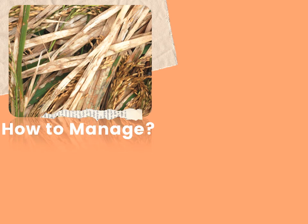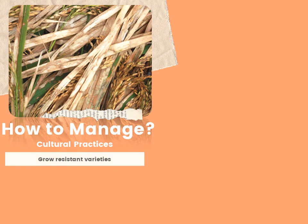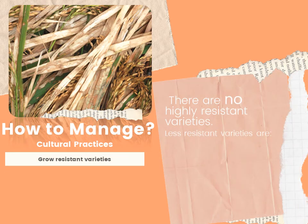For management options, we have cultural, biological, and chemical approaches. Starting with cultural practices: the disease may be controlled by using resistant varieties. There are no fully resistant varieties, but research indicates that moderately susceptible and moderately resistant varieties perform better than susceptible ones. In fields with a history of losses due to severe sheath blight, less susceptible varieties may be planted.